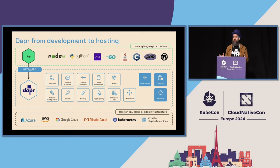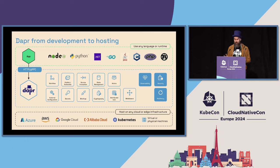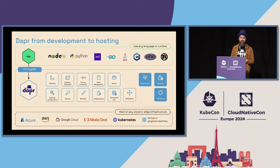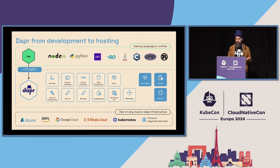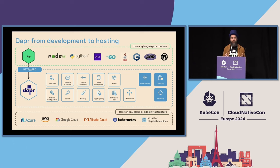Dapr offers a very broad suite of different APIs that really speeds up microservice development. One of the newer ones is workflows — you can now write workflows in code for service orchestration. There's also a pub/sub API, a service invocation API, state management, the actor model, and more, and with each release this API suite grows bigger.